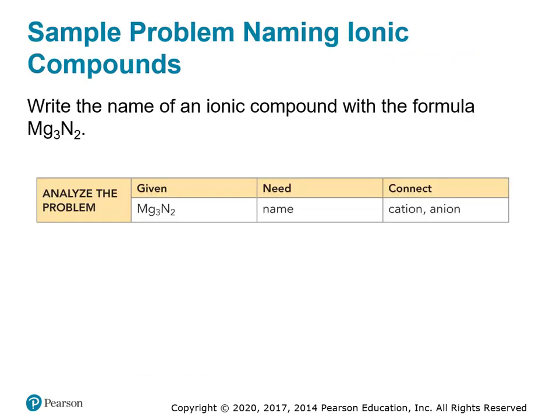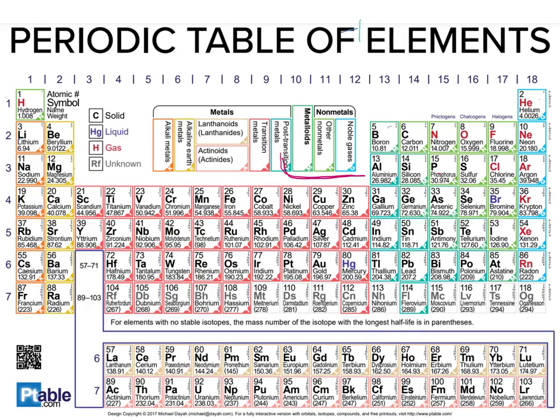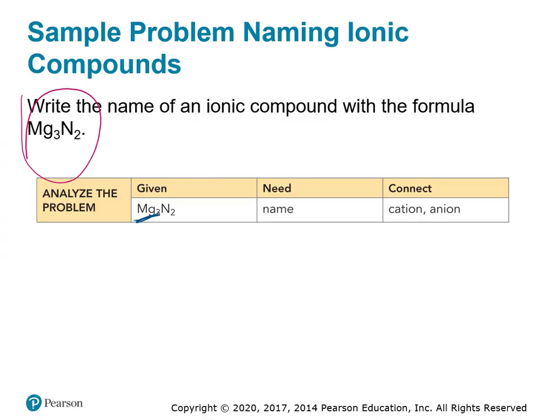Can you write the name of an ionic compound with this formula? Pause the video and see if you can. Hopefully you looked at your periodic table and said magnesium is the first one listed in that compound, and magnesium is a metal, so we know it's an ionic compound. We name the metal, then we name the non-metal and change the non-metal's ending to '-ide.' So all we need to say is magnesium nitride.